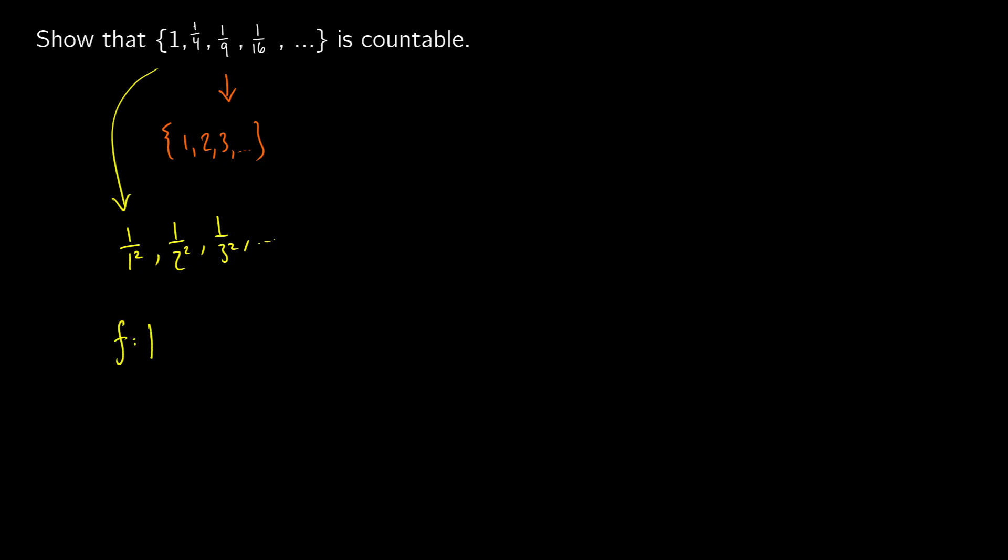So what we can do is we can take a function and we can say, okay, this function is going to go from the natural numbers to our set {1, 1/4, ...}. We'll take a number from our natural numbers and we're going to just simply map it onto 1 over n squared.